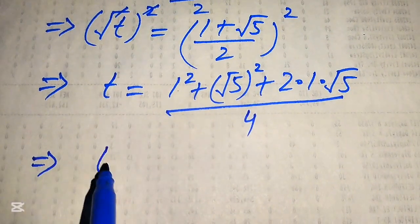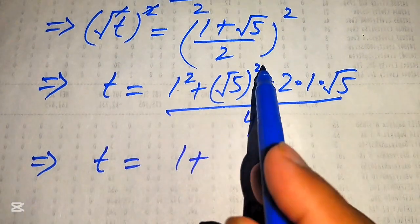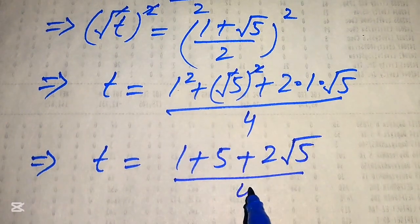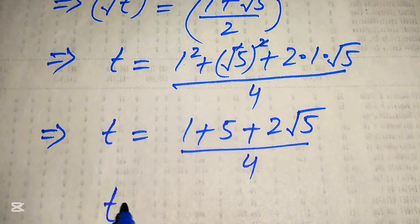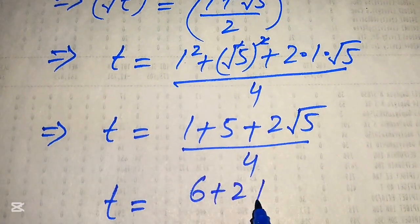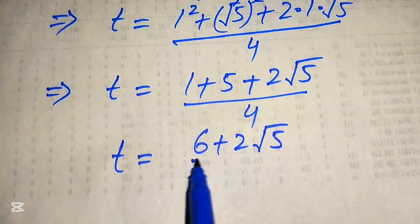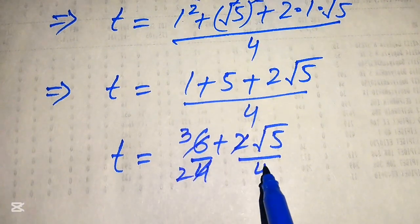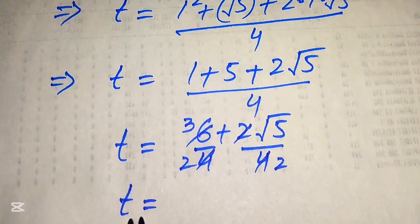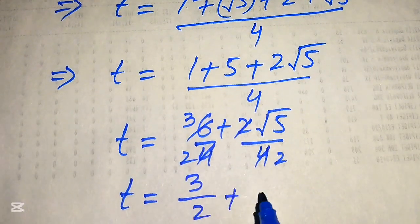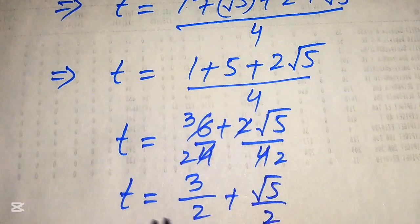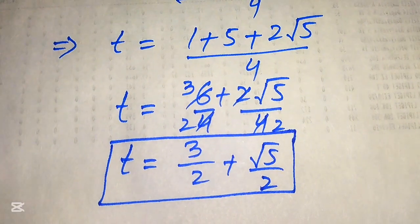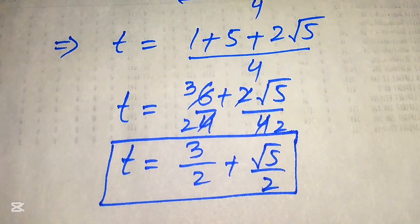Simplifying: 1 squared equals 1, square root of 5 squared equals 5, and we have 2 times square root of 5, all divided by 4. So t equals 6 plus 2 times square root of 5, divided by 4. Breaking the fraction, we get t equals 6 over 4 plus 2 square root of 5 over 4, which simplifies to 3 over 2 plus square root of 5 over 2. This is our final answer. Thank you for watching — please subscribe for more videos.